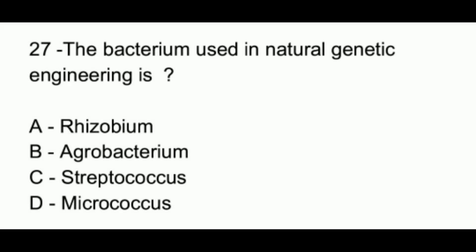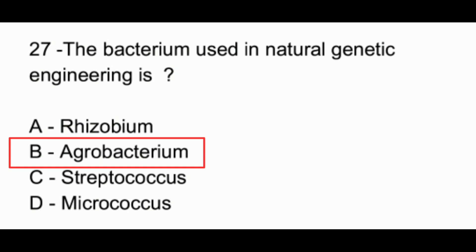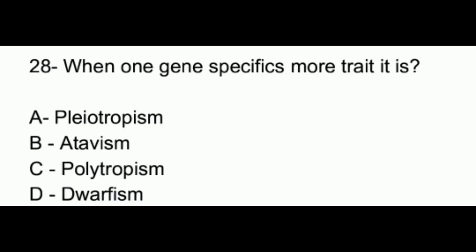Question number 27. The bacterium which is used in natural genetic engineering is: option A, Rhizobium; option B, Agrobacterium; option C, Streptococcus; option D, Micrococcus. The answer to this question is option B, which is Agrobacterium.